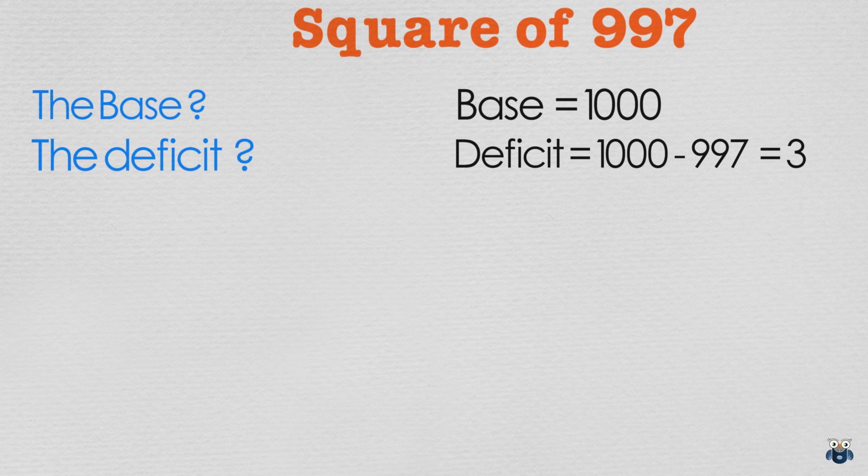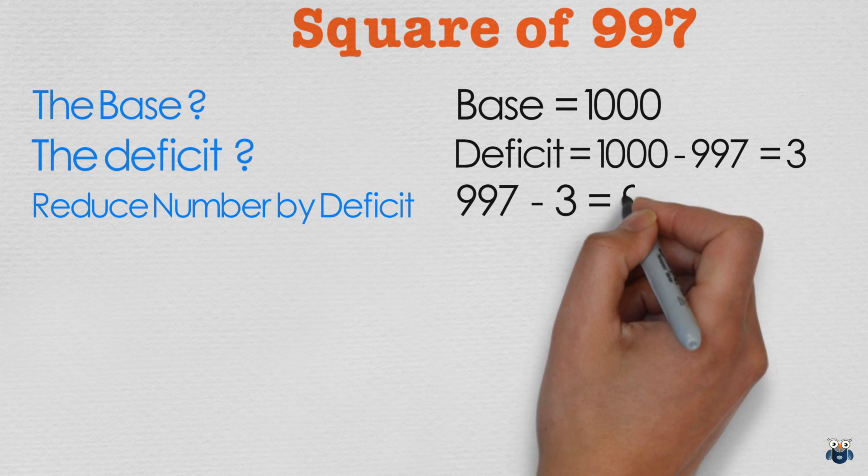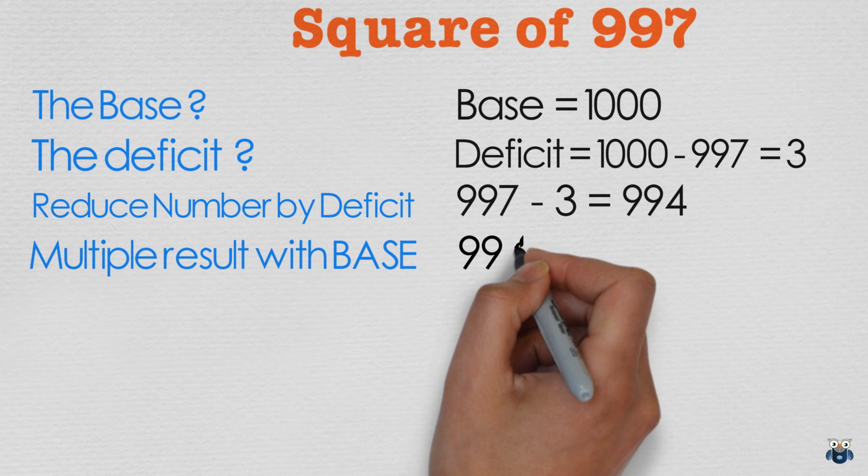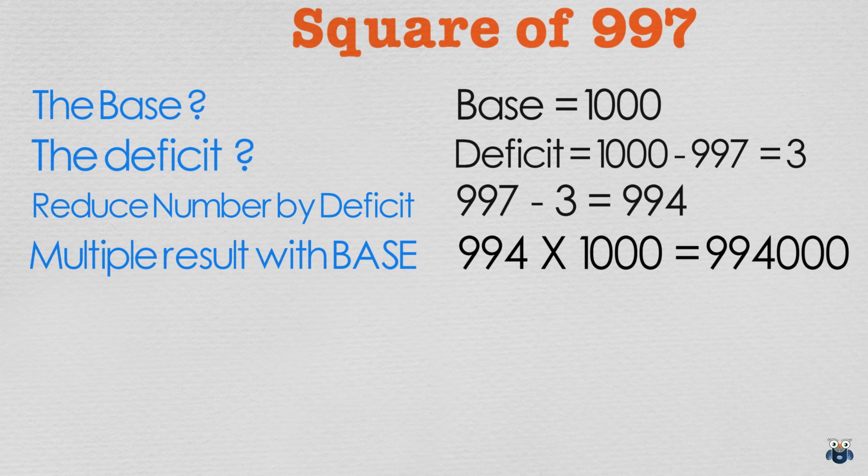Since 997 is less than the base, we subtract the deficit. So 997 minus 3 is 994. We then multiply this result with 1000 our base. 994 times 1000 is 994000.